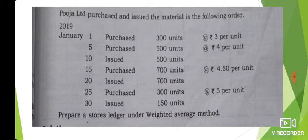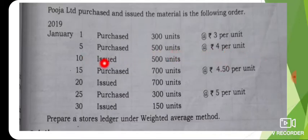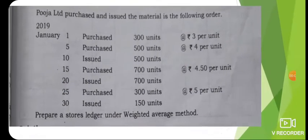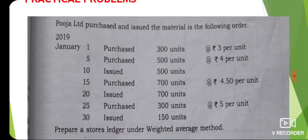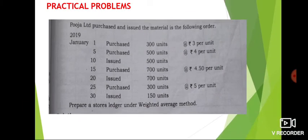Now, I have a question for you. I will take a screenshot of the video problem. The material transactions are in the following order: Purchased 300 units per unit, Purchased 500 units per unit. This is the issue. I will try to answer your question. If you have a question, please ask.